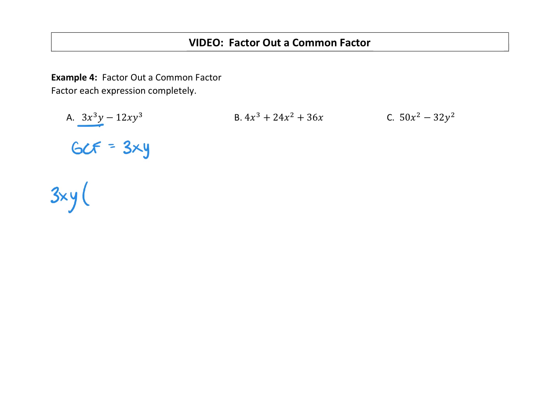When you factor a 3xy out of that first term, we're left with an x squared. Carry on your subtraction. Factor a 3xy out of that term, and you are left with a 4y squared. So we factored out a GCF. Can we continue to do any more factoring?